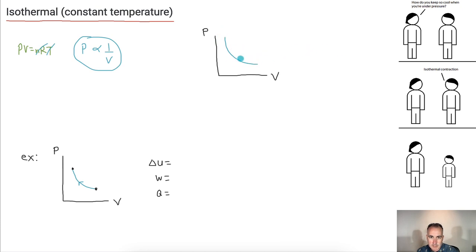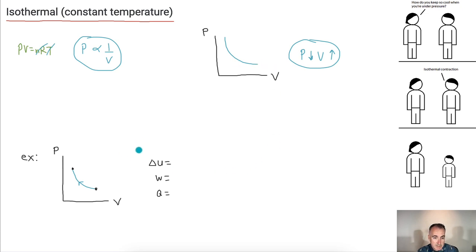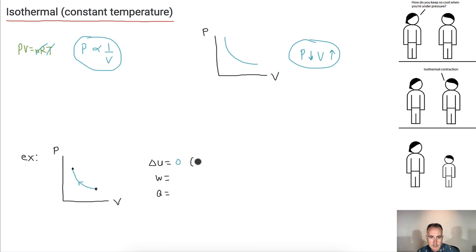As pressure goes down, the volume goes up. Looking at this particular example: delta U is actually pretty easy because the temperature is constant. If the temperature doesn't change, delta U equals zero — because T is constant, the internal energy doesn't change.